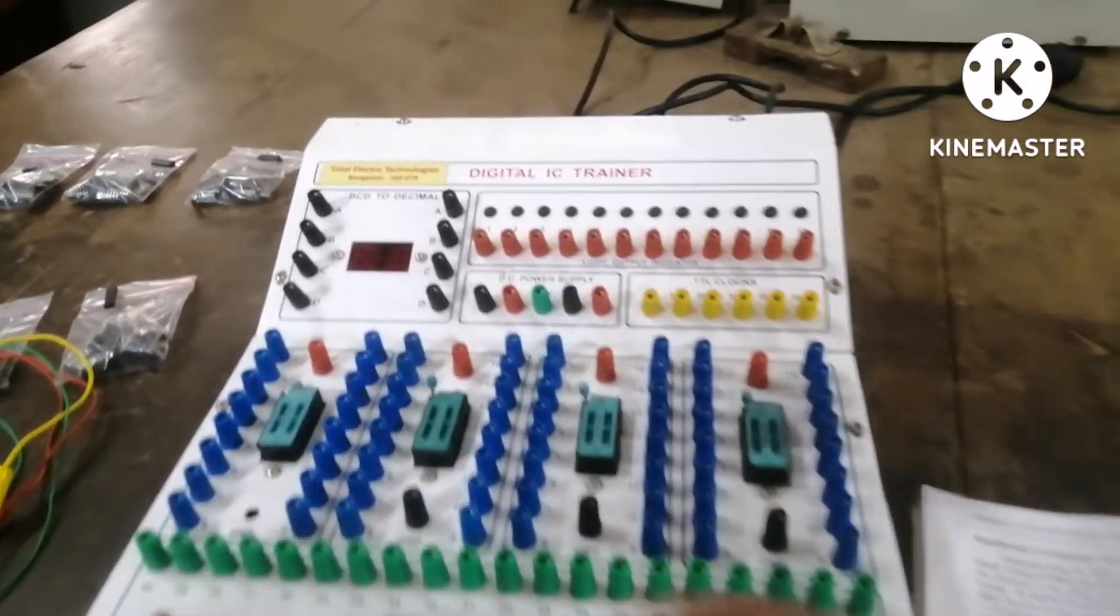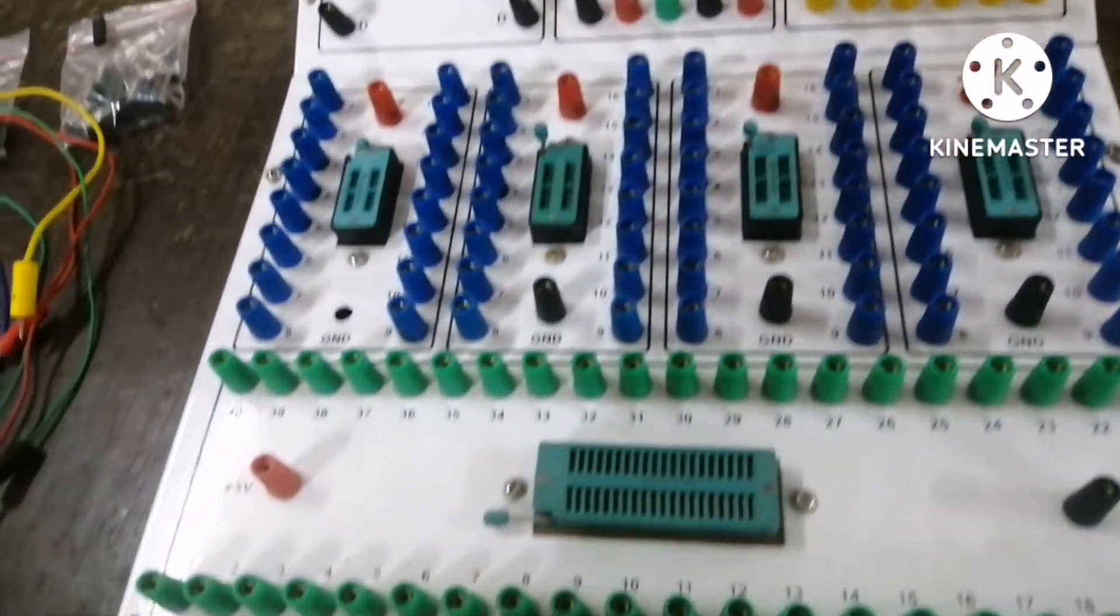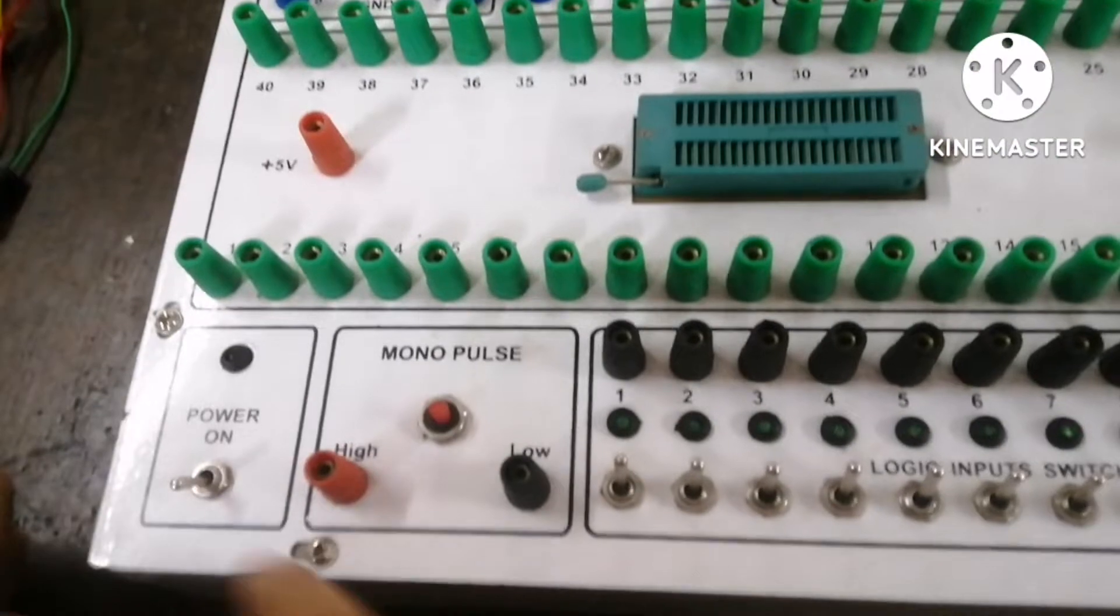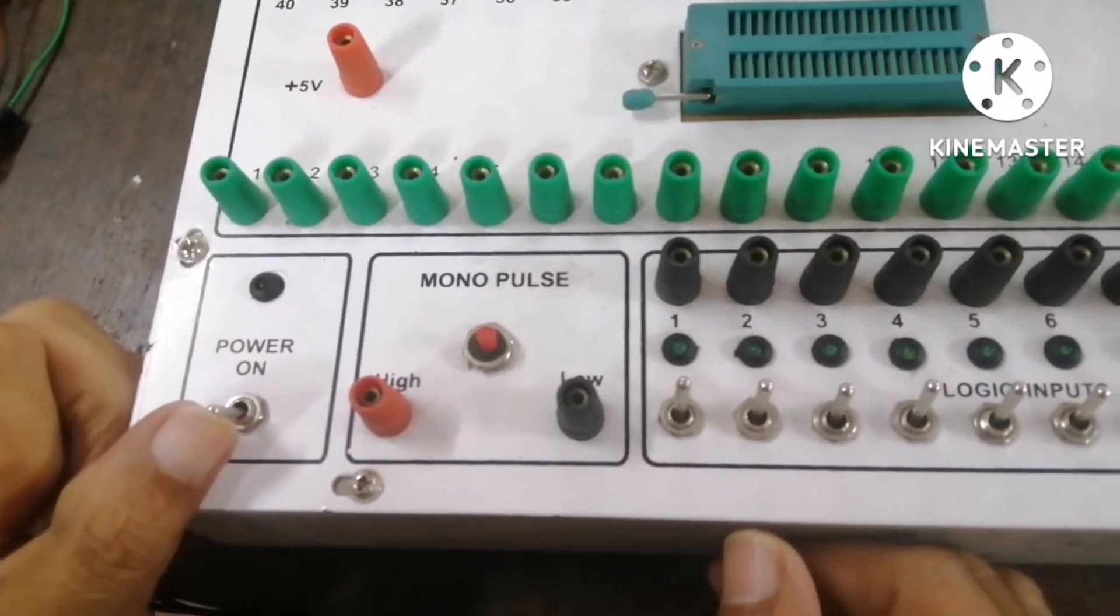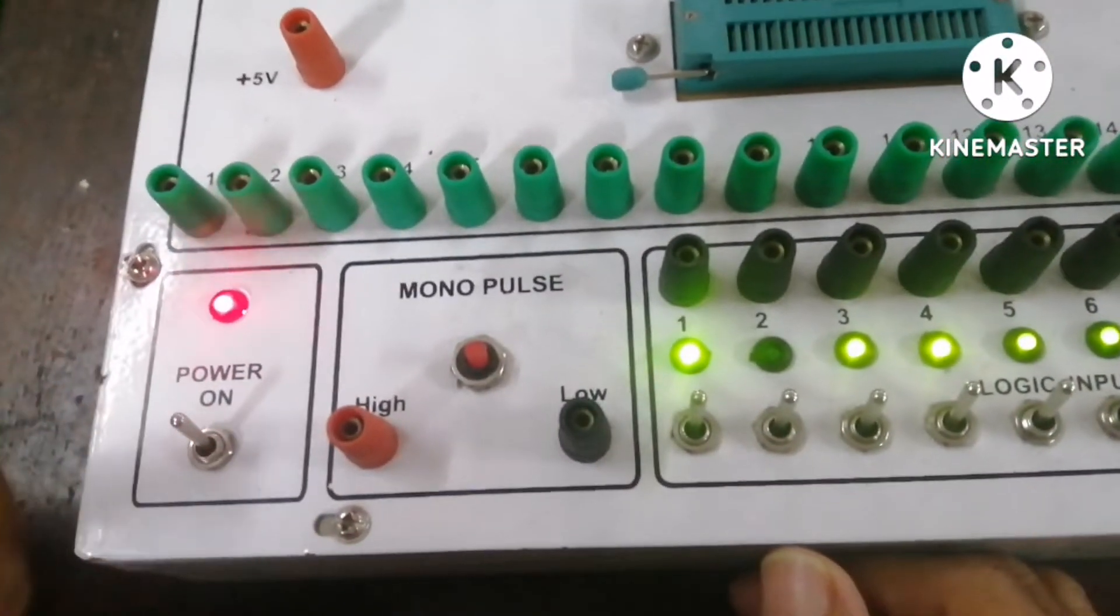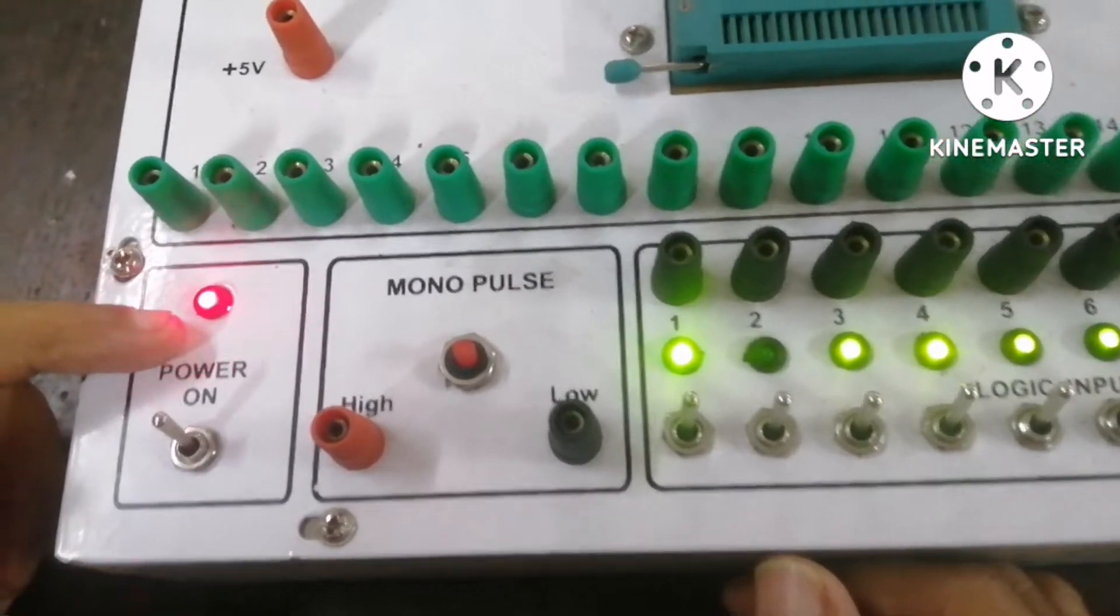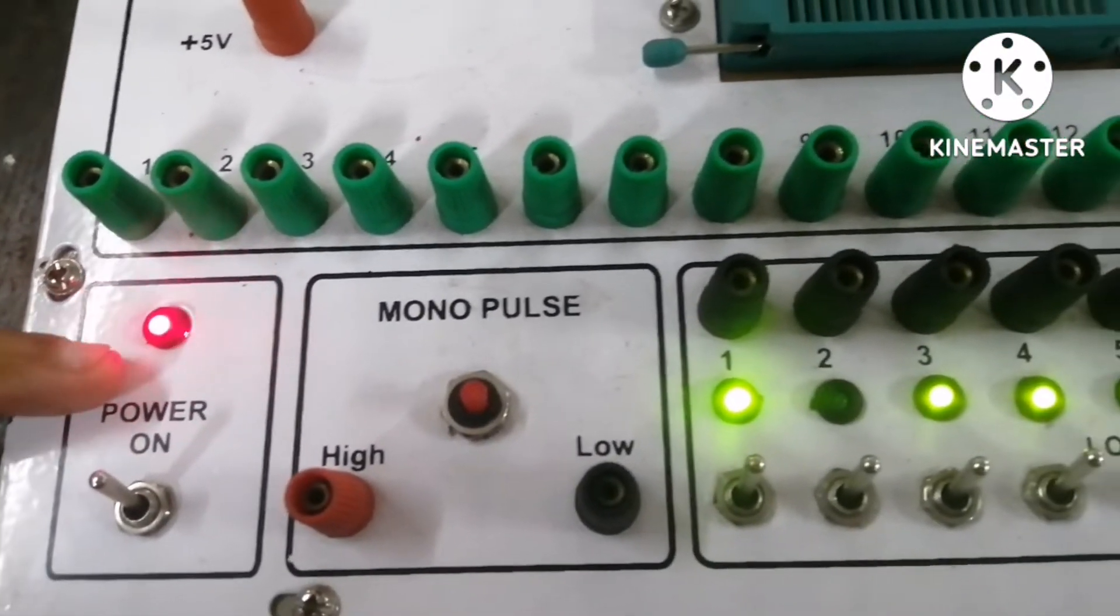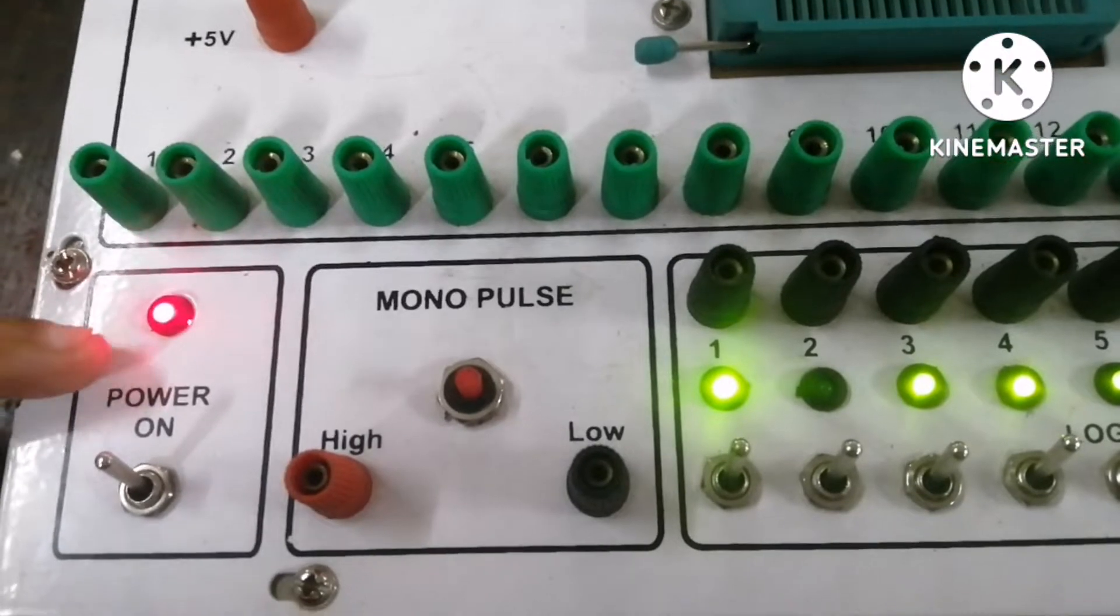Firstly, this is the power button of the digital IC trainer kit. First we have to turn on the power button. So one indicator, a red color light, will come. It indicates that it is in the on condition.